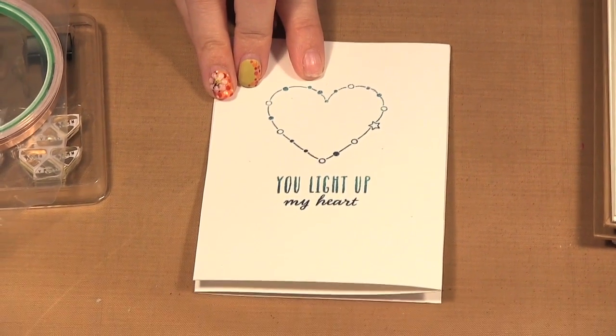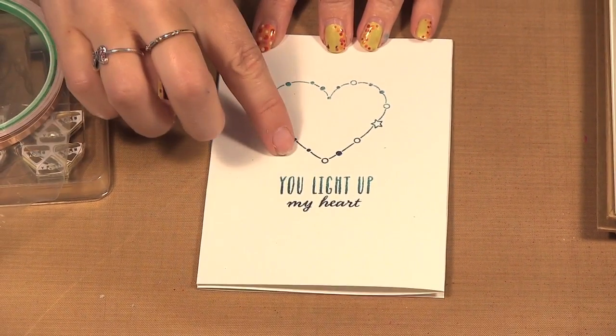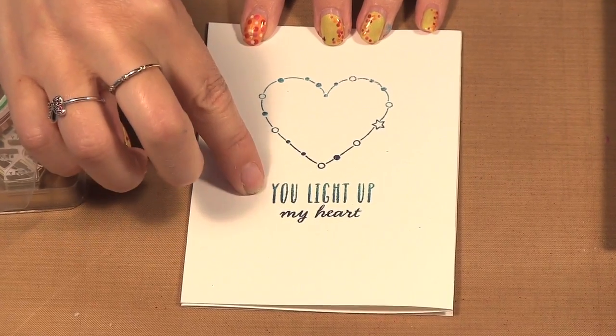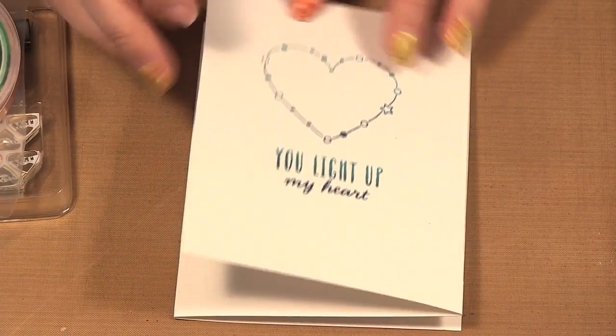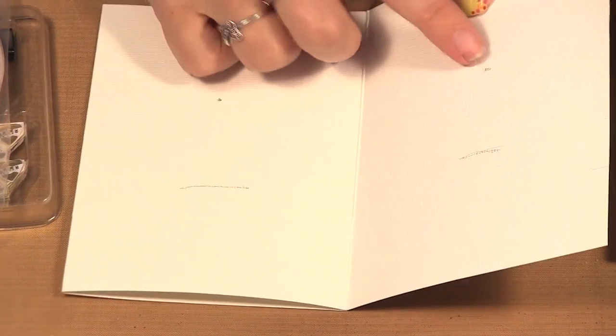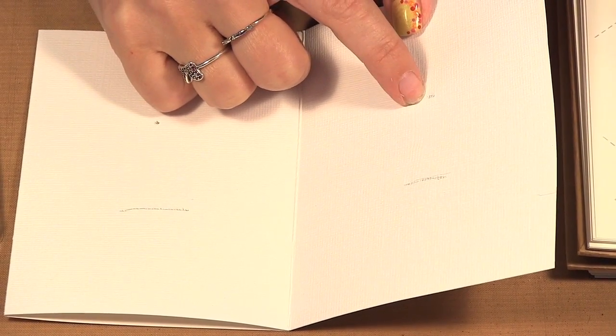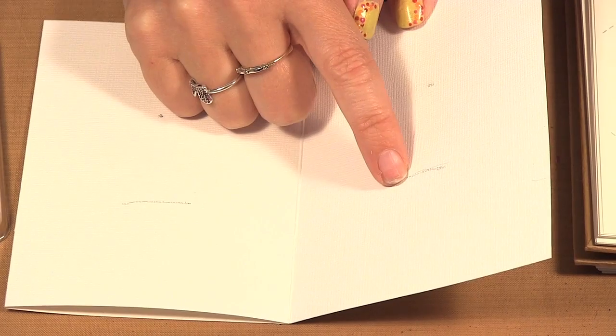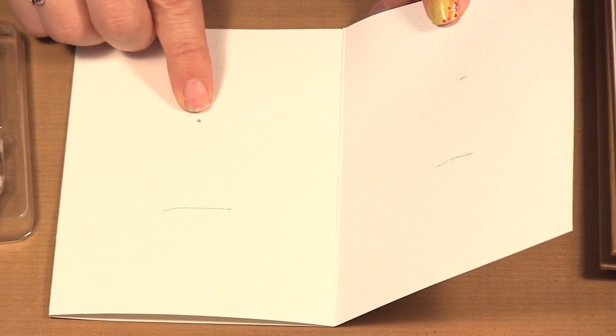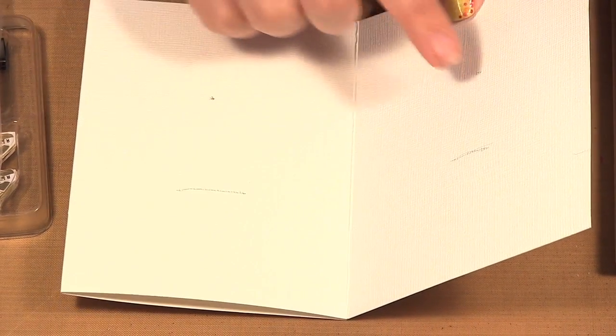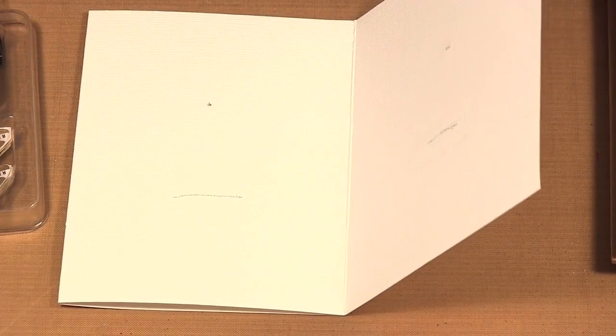And then I used the Pool to Navy Ombre ink pad for my stamping. So you can see here the heart goes from light to dark as well as my lettering goes from light to dark. Now what I did was I made a mark with my pencil where I want the light and where my switch is going to be and I transferred it here.